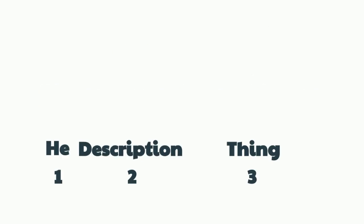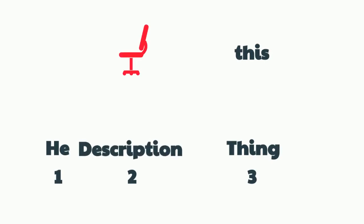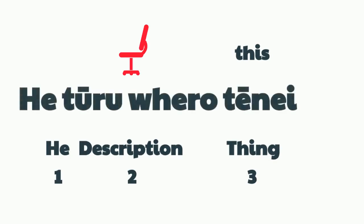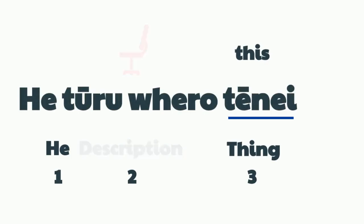If you wanted to say this is a red chair, red chair would be the description, and this would be the thing. He whero tūru tēnei — this is a red chair.